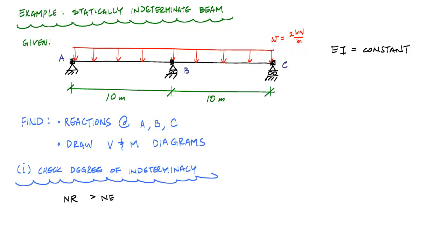The first thing I need to do when given a beam is verify that it's statically indeterminate. The way we check for determinacy — the simplest way — is to compare the number of reactions and the number of equilibrium equations, especially when it's just a beam. Here, the pin support at A has two reactions: A_Y and A_X.